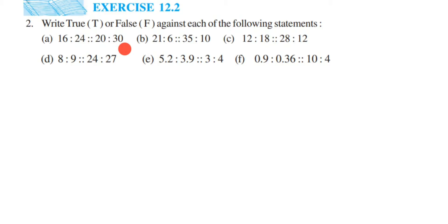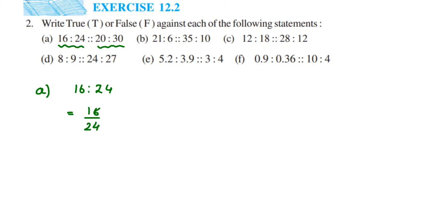Let's take the first example. We have the first ratio 16 is to 24 and the second ratio is 20 is to 30. We're going to reduce them to the lowest form, because ratios are always in lowest form, and then we'll see if they're equal or not. Converting to fraction: 16 by 24 — we can cancel this in the four table, since four fours are 16 and four sixes are 24.